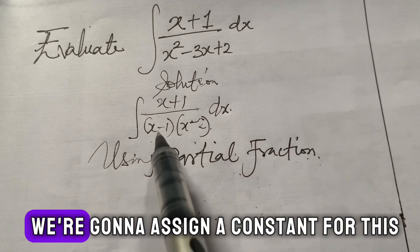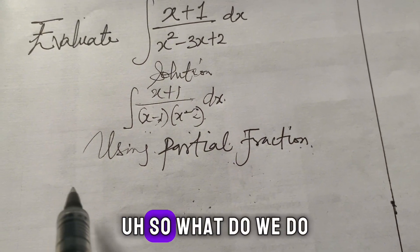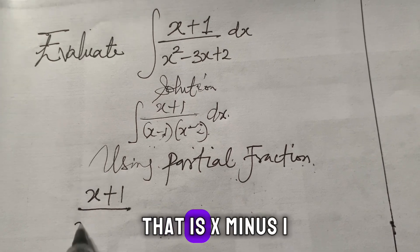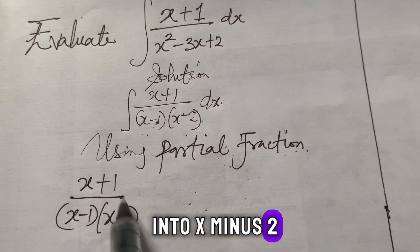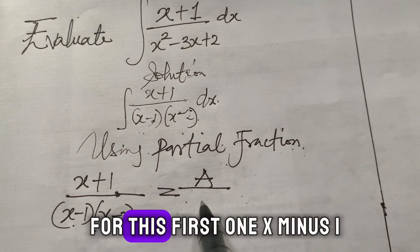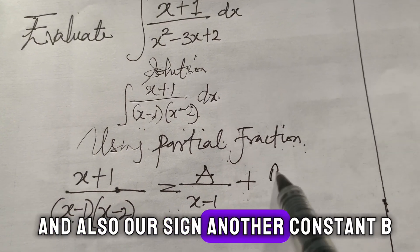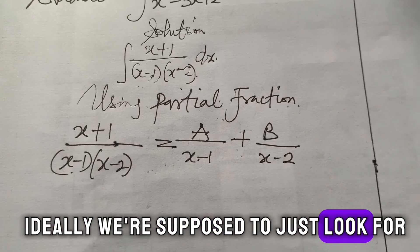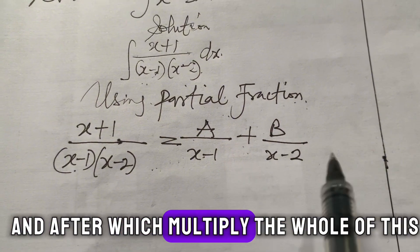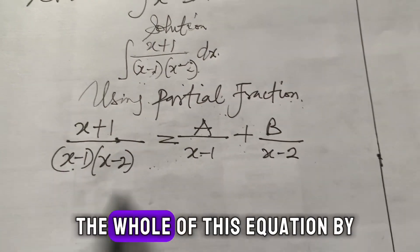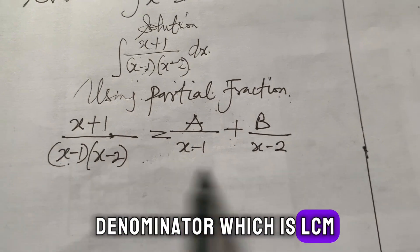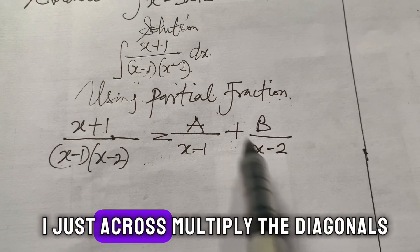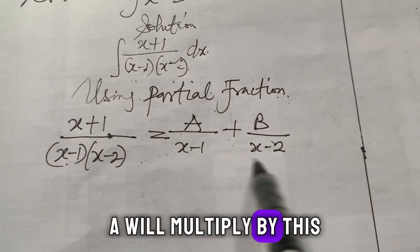To express this in partial fractions, we assign a constant for each factor. So we write: (x + 1) / [(x − 1)(x − 2)] = A / (x − 1) + B / (x − 2). We find the LCM of the denominators, and the quick way is to cross-multiply the diagonals: A multiplies by (x − 2) and B multiplies by (x − 1), then equate to the numerator.